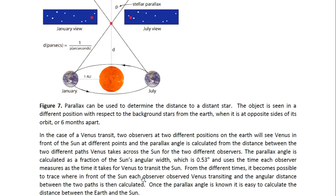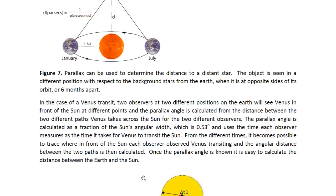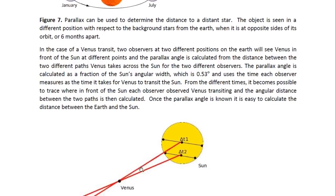Now, in the case of a Venus transit, two observers at two different positions on the earth will see Venus in front of the sun at different points. And the parallax angle is calculated from the distance between the two different paths Venus takes across the sun for the two different observers. The parallax angle is calculated as a fraction of the sun's angular width, which is 0.53 degrees, and uses the time each observer measures as the time it takes for Venus to transit the sun. From the different times, it becomes possible to trace where in front of the sun each observer observes Venus transiting, and the angular distance between the two paths is then calculated. Once the parallax angle is known, it is easy to calculate the distance between the earth and the sun.